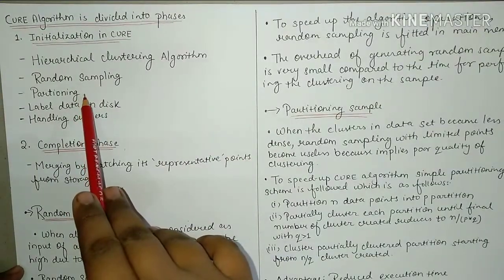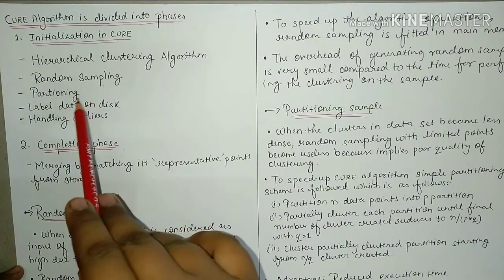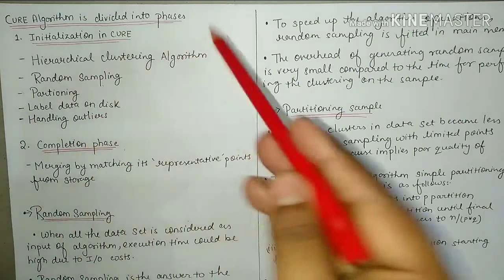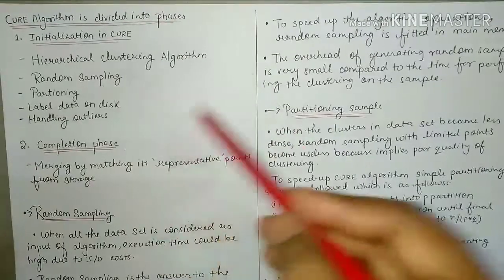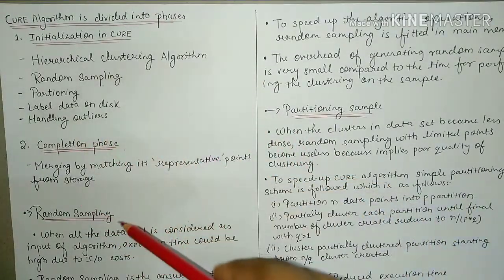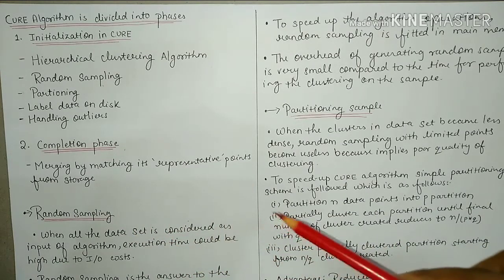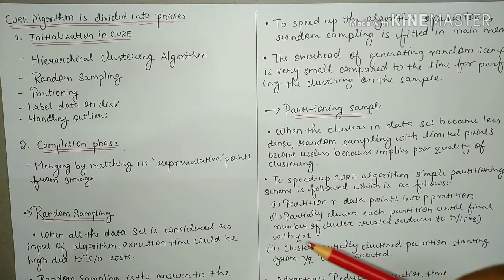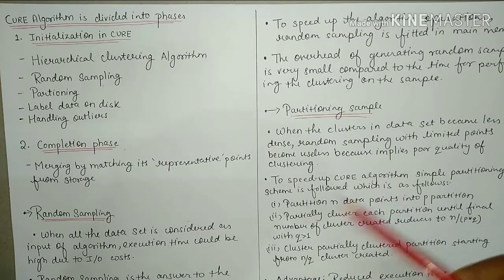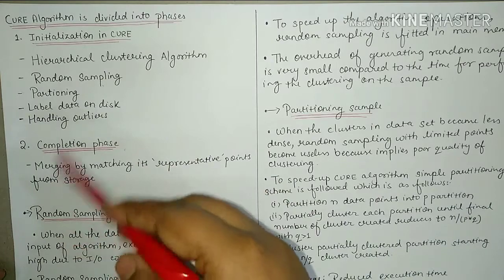The next step will be Partitioning. Partitioning में आपका जो बड़ा random sample रहेगा, उसको small-small samples में partition करेंगे — you divide the large random sample into smaller and smaller partitions, until the cluster cannot be made any smaller.